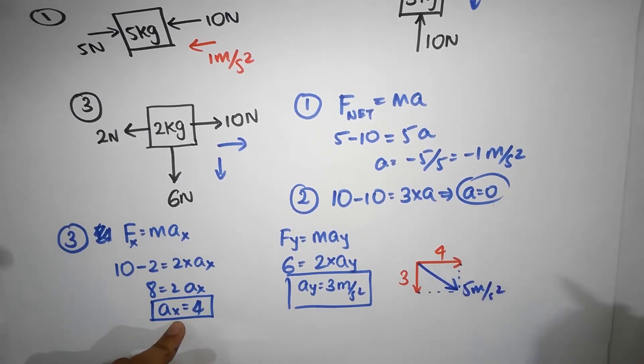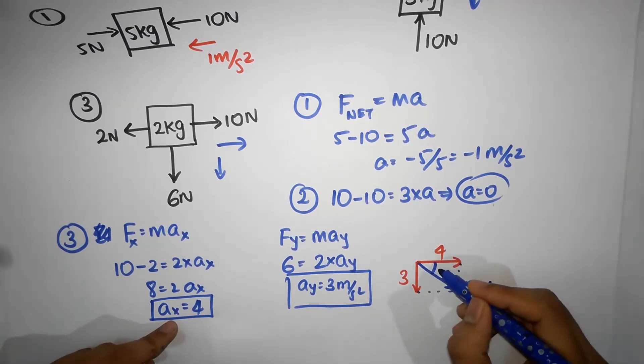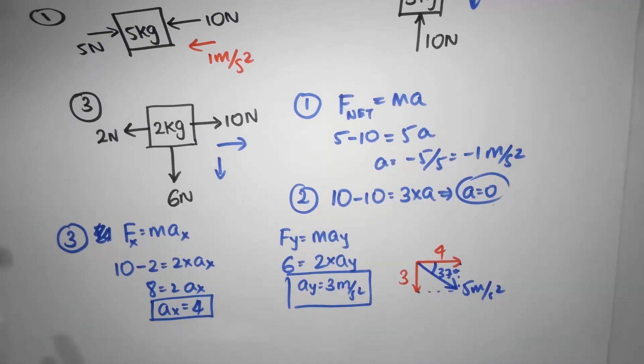That is 5, Pythagoras theorem, meters per second squared, this angle, well, it's 3, 4, 5, so it's 37 degrees. This will be 53 degrees.